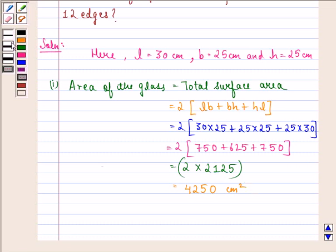So this is how we get the answer to the first part. Area of the glass is same as total surface area. That is equal to 4250 cm square. So this is our answer to the question.